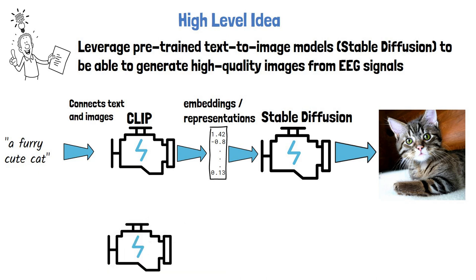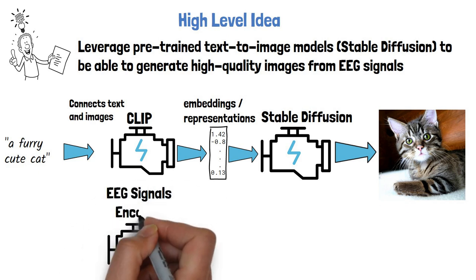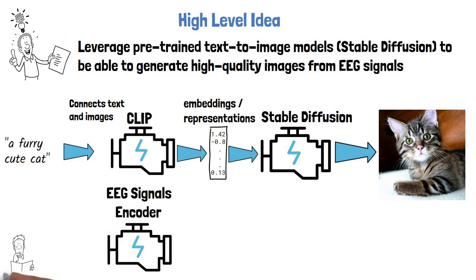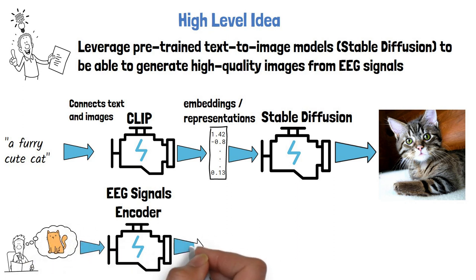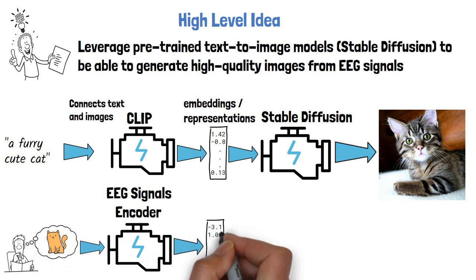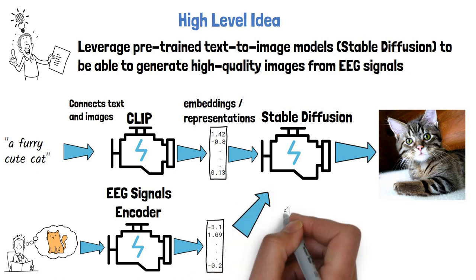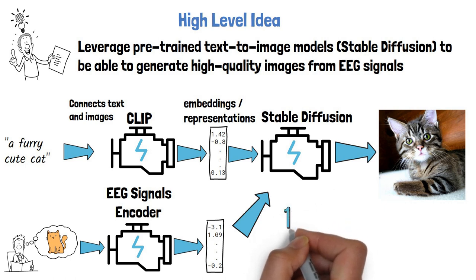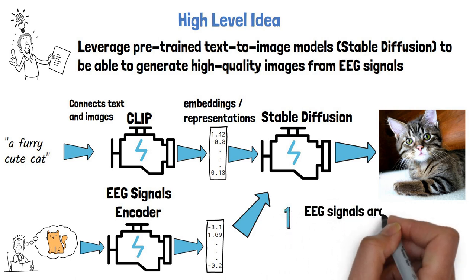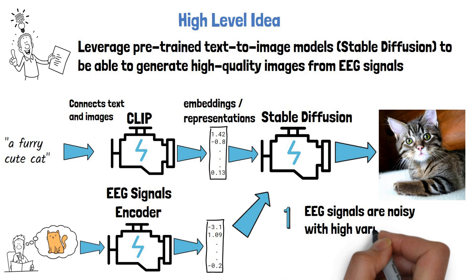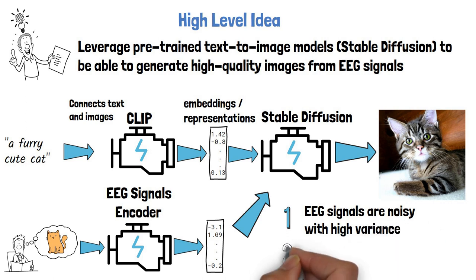So the idea is to introduce an encoder that will create embeddings from EEG signals — meaning we could think about a cat, provide the corresponding EEG signals to that encoder, and then feed the embeddings to Stable Diffusion to generate a cat image. However, there are two major challenges with that approach. One is that EEG signals are noisy and have high variance, so it is not going to be trivial to create an encoder that is able to create high-quality embeddings.